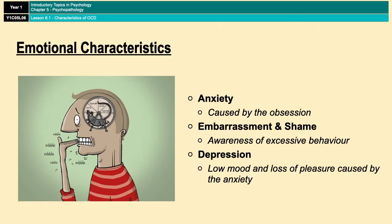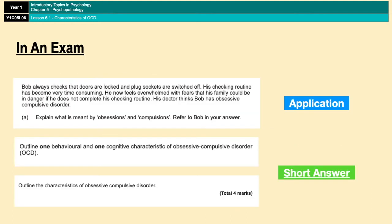Those are the characteristics of OCD. If this comes up in an exam, you'll most likely be asked to name, explain, or pick out different symptoms. When picking out, you'll typically be given a story of some kind and asked to find the symptoms located within the story and justify your answer. On the screen now is the first question, which is about Bob — one of those pick-out questions where you have to explain what is meant by an obsession or compulsions in relation to the story.